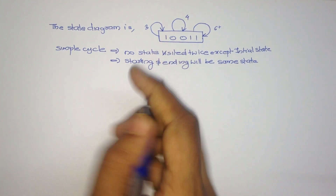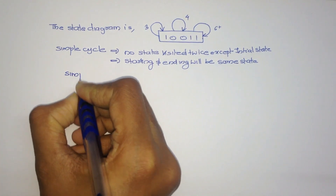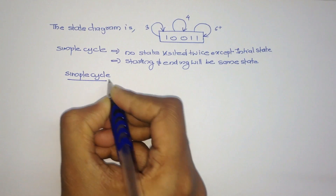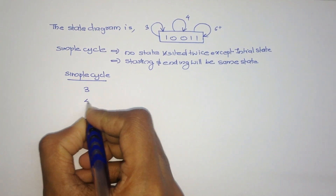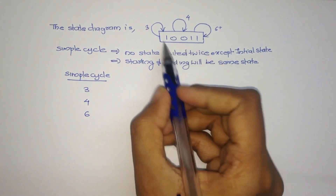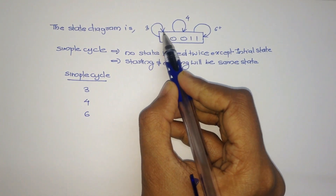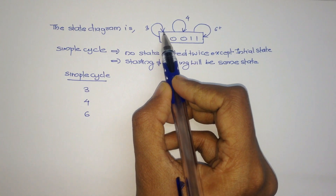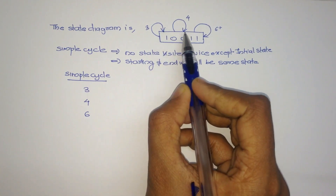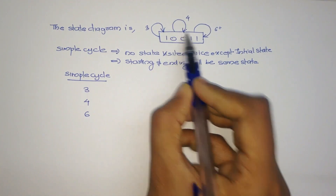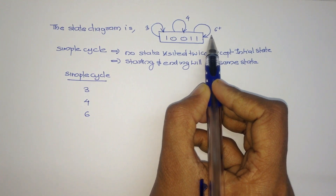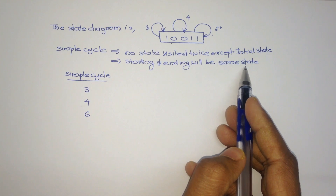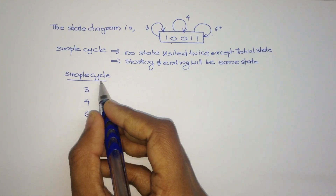From this figure, we can write the symbol cycle as 3, 4, 6. Look at this here — each node is visited only one time. 4 is like that also, 6 is like that also. And also, the starting and ending are the same state.